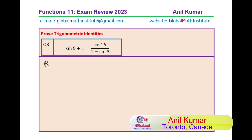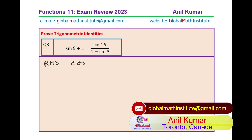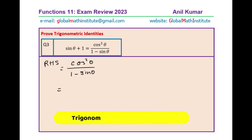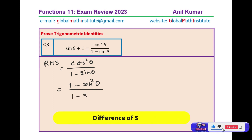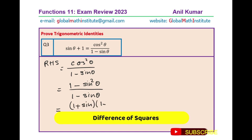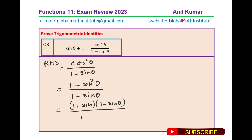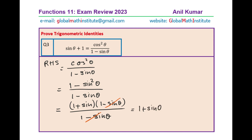The right hand side is more complicated, so we begin with the right hand side, which is cos squared theta over (1 minus sin theta). I prefer to use the Pythagorean identity and change cos squared theta as 1 minus sin squared theta. We write the numerator as 1 minus sin squared theta, which can be factored as (1 plus sin theta)(1 minus sin theta) over (1 minus sin theta). As you can see, 1 minus sin theta cancels and you are left with 1 plus sin theta, which is equal to the left hand side.